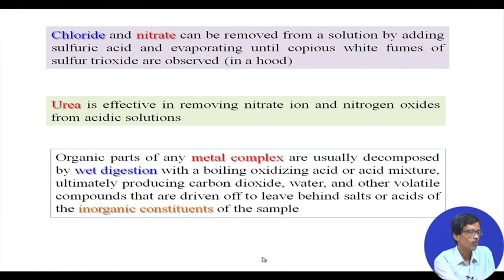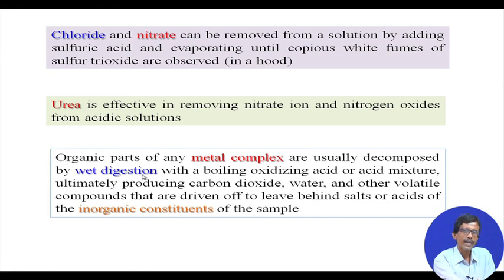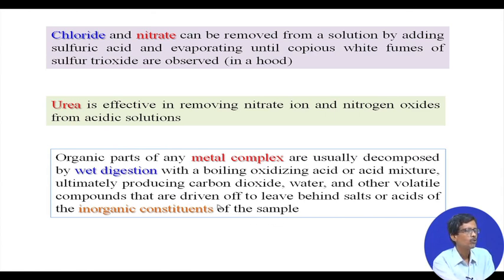So this extraneous matter we are removing. What we can write is that the organic part of any metal complex — the example being the nickel DMG complex — can be decomposed by wet digestion. The steps to follow one after another are: you have a metal complex, you go for wet digestion by boiling with some oxidizing acids or any other oxidizing agent like bromine or hydrogen peroxide, and drive out all the gases that are forming, leaving behind the corresponding metal ions.